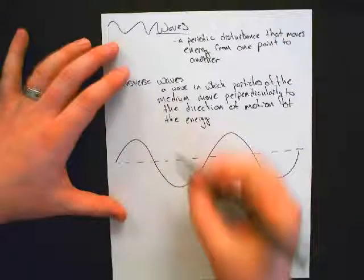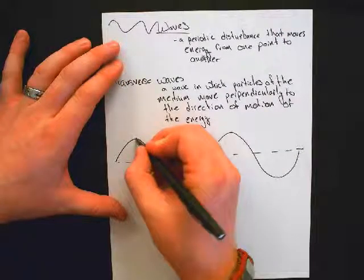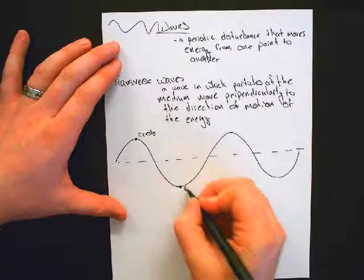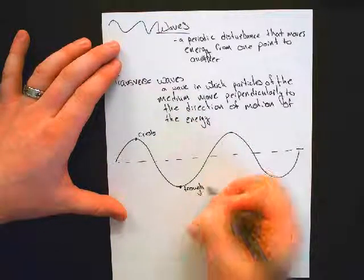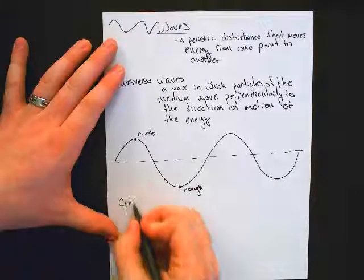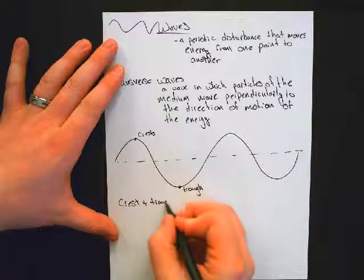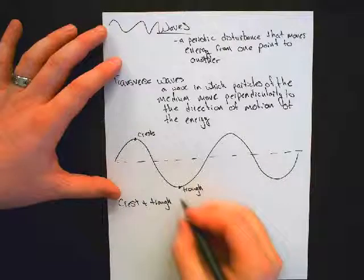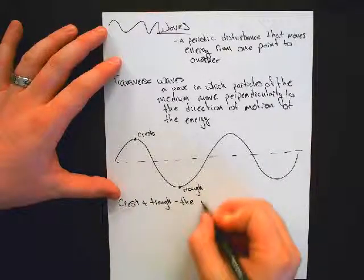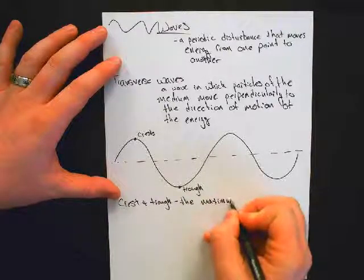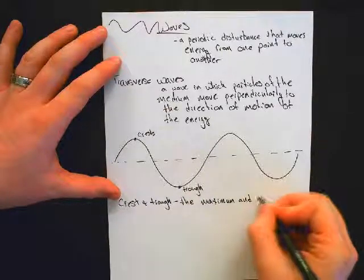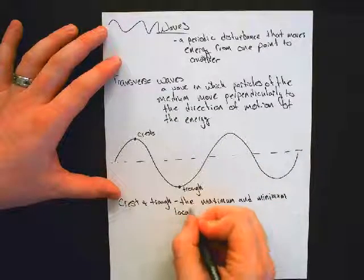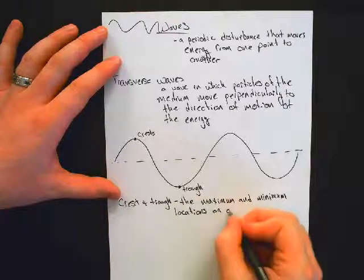A few points that you'll recognize. First of all, on top, crests. The bottom, troughs. Crest and trough are the maximum and minimum locations on a wave.